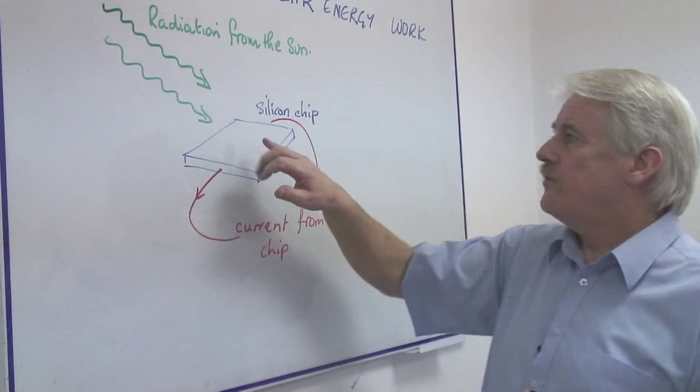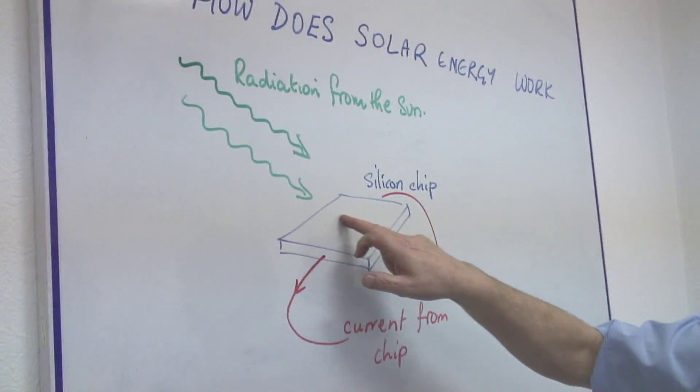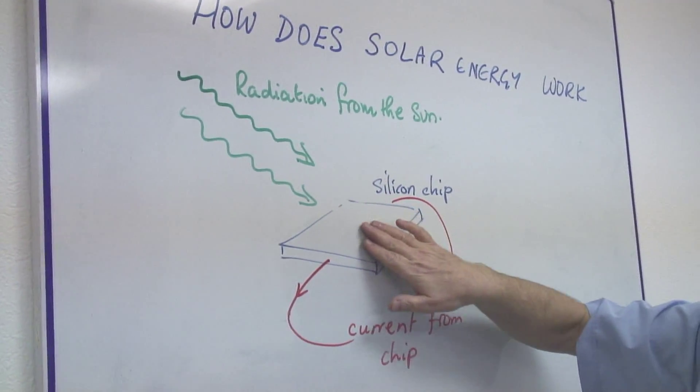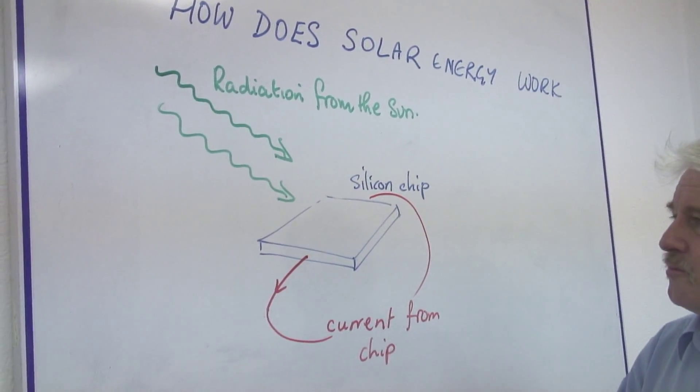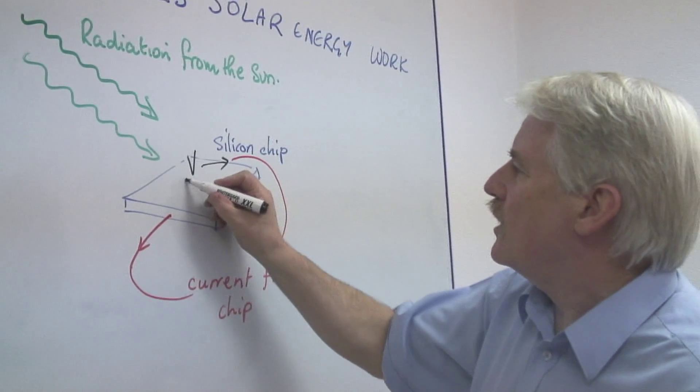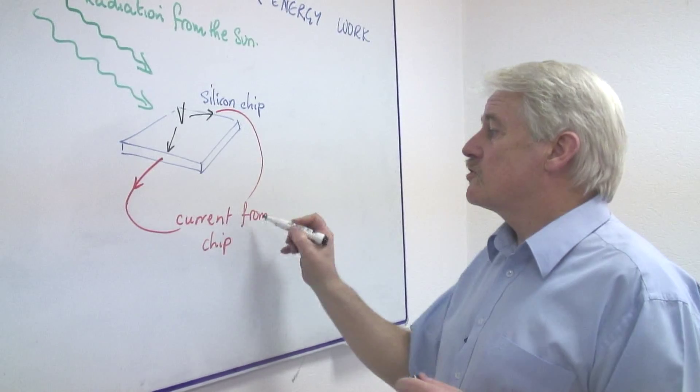Some kinds of radiation when they hit the surface of a silicon chip, that is a thin slice of silicon crystal, it sets up a voltage between the ends. So you get a voltage between the sides of the chip. And that voltage will produce a current.